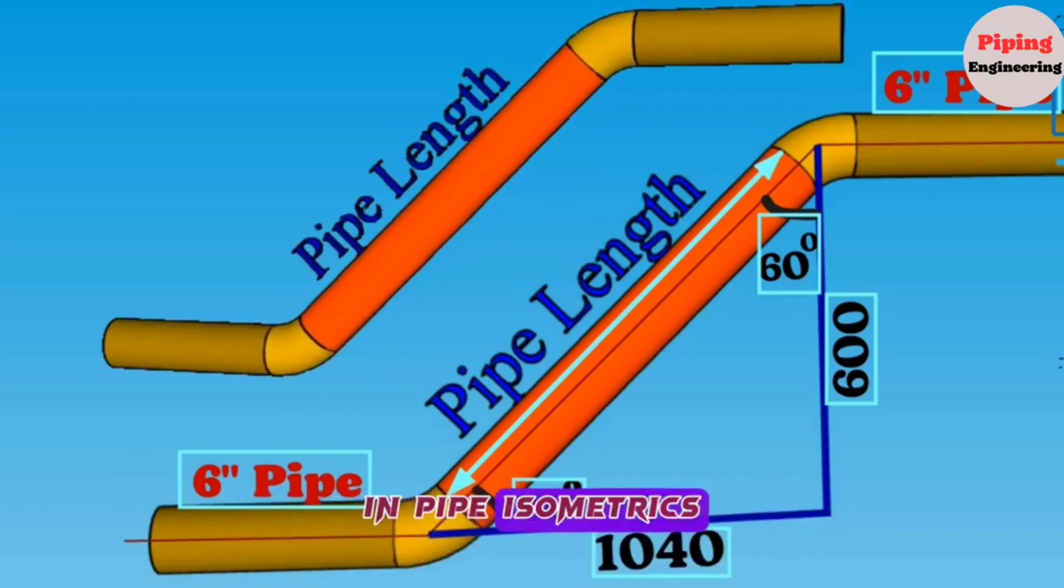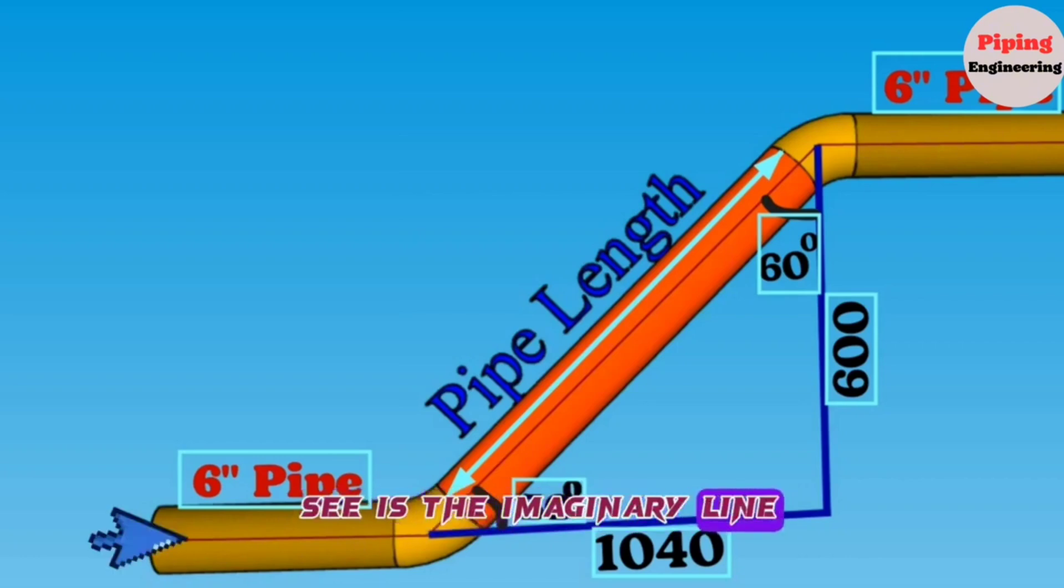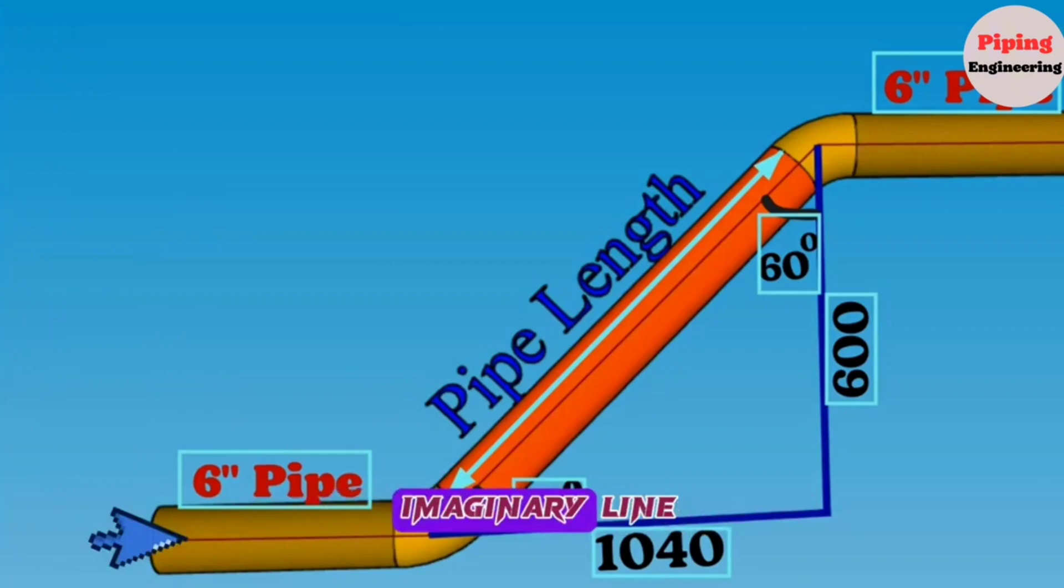In pipe isometrics, length measurements are calculated from imaginary lines passing through the center of the pipes. This thin line you see is the imaginary line passing through the center of our 3D pipeline, and we will calculate the measurements from this imaginary line.